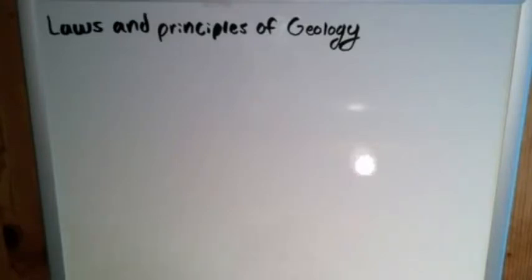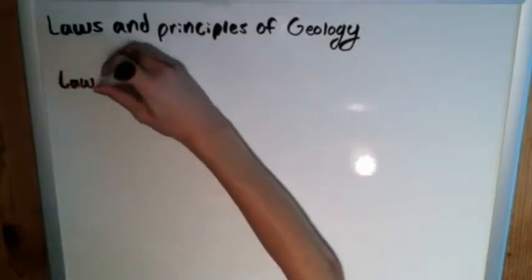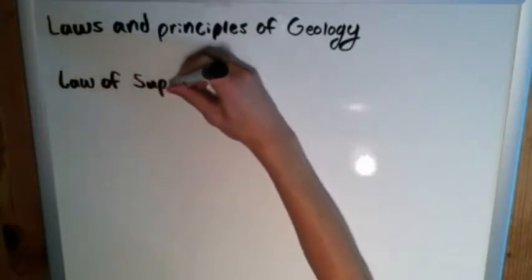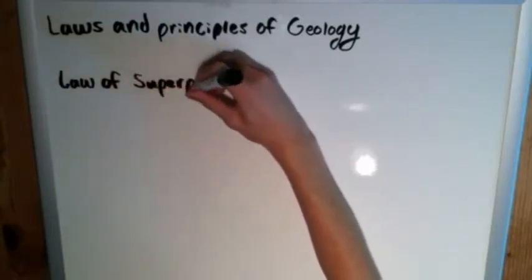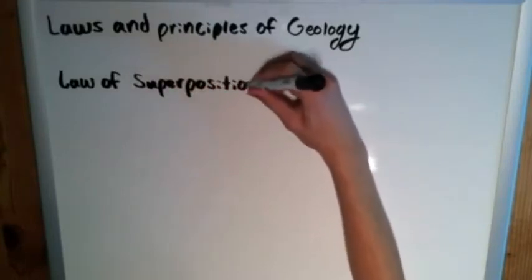So starting it off, we've got the law of superposition, which was discovered or named, rather, by a guy named William Smith. After naming it, his friends called him Strata Smith.